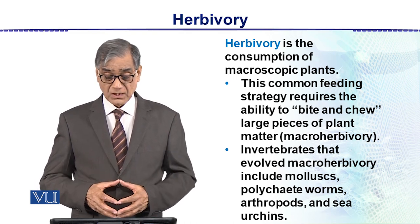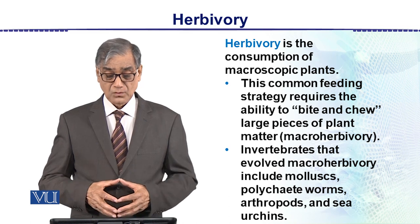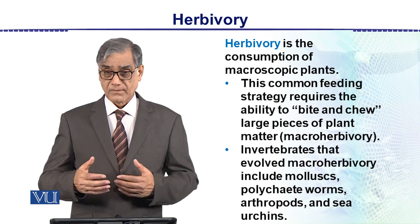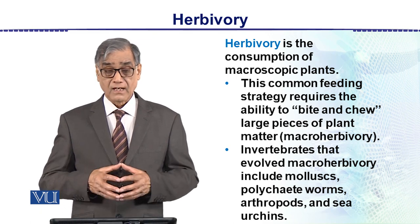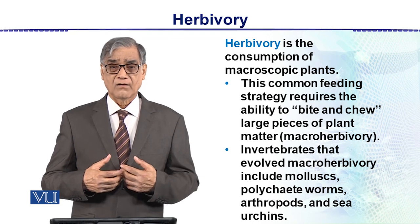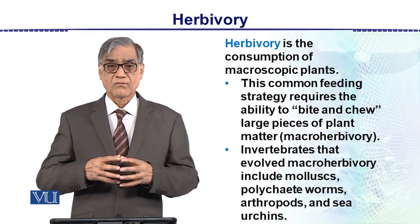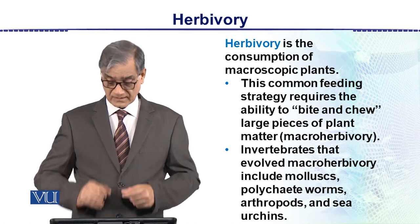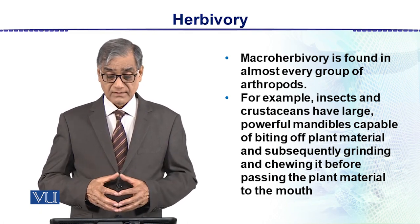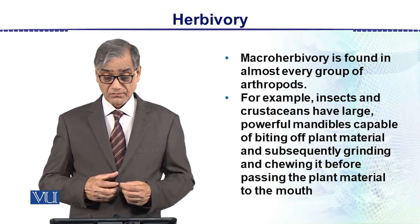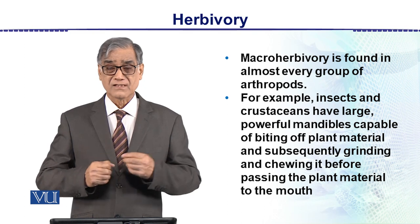This is macro-herbivory, which involves invertebrate animals. Macro-herbivory is found in almost every group of arthropods. For example, insects and crustaceans have large, powerful mandibles — very large mandibles with which they bite, cutting pieces almost like a saw.